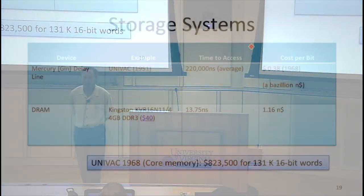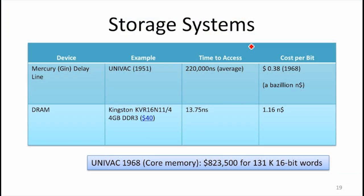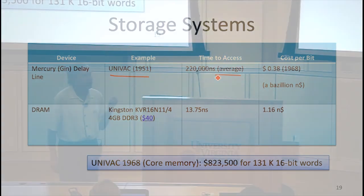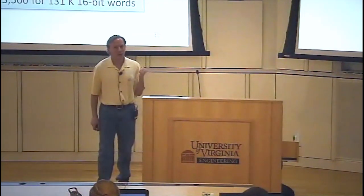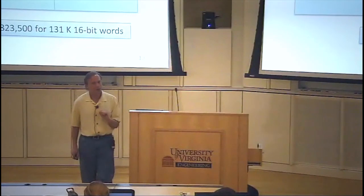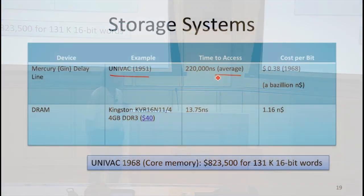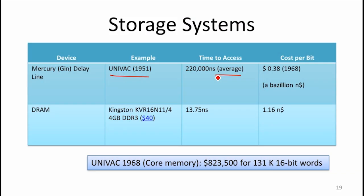We've got two entries in our comparison table now. We have the Mercury delay line used in many early computers including UNIVAC — access time depends on which bit you're accessing, with an average of hundreds of thousands of nanoseconds. A nanosecond is a billionth of a second, so a million nanoseconds is a millisecond — 200,000 nanoseconds is still two ten-thousandths of a second, which is really slow. Modern DRAM targets more like 14 nanoseconds.